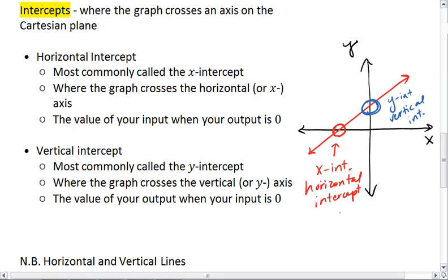Horizontal intercept is what value for your input will give you zero for your output, and vertical intercept is when you plug in zero for your input, what value do you get for your output.